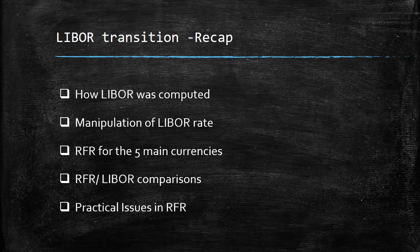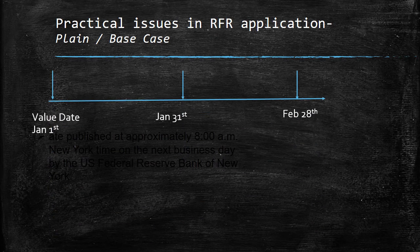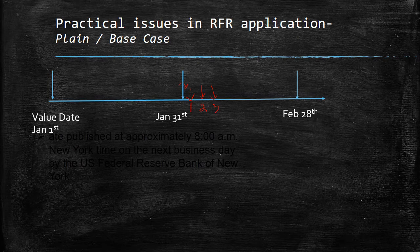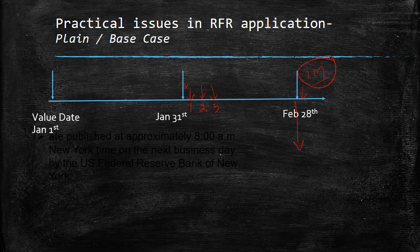Let's do a quick recap and see what the practical difficulties are in implementing RFR. In the plain base case, the rate of the first is only known from the previous day's rate. When I have to apply the rate for the second, it comes only on the third morning. Similarly, the rate of the third I will get on the fourth morning, and so on. So to get the final interest amount on Feb 28th, I will only come to know it on March 1st. This gives a lot of liquidity problems to both the borrower and lender — the borrower only finds out on 1st March how much he has to pay for the February installment.